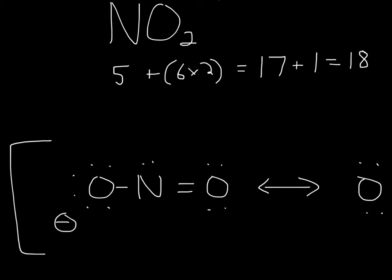So in this case, N would be less electronegative than oxygen, so you put it in the middle, you put two oxygens, and then just try to use these electrons to find the most stable arrangement.